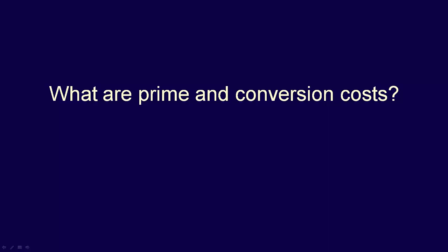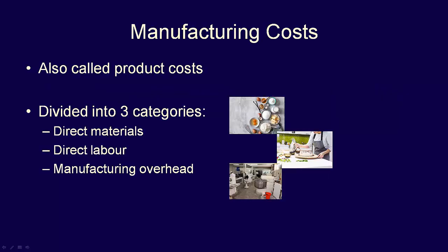What are prime and conversion costs? Remember that manufacturing costs, also called product costs, are made up of three categories: direct materials, direct labour, and manufacturing overhead, which are all the indirect costs.